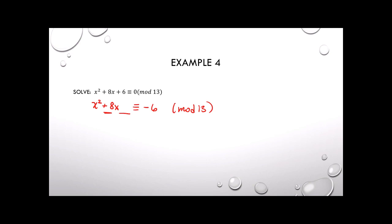Half of 8 is 4, and 4 squared is 16, so we add 16 to both sides. By design, the left-hand side is now a perfect square, factoring to (x plus 4) squared. You can verify: multiplying back out gives x squared plus 8x plus 16.